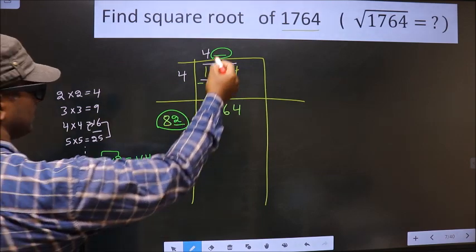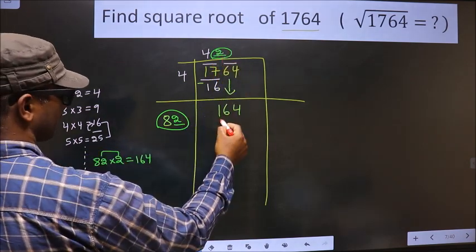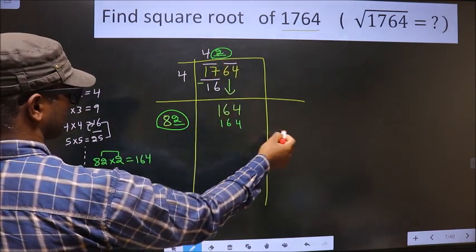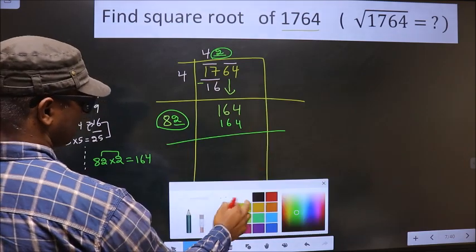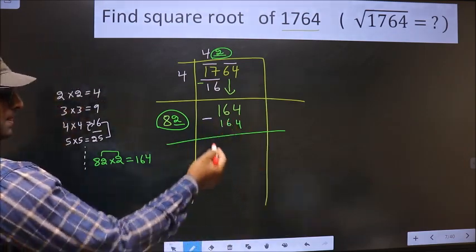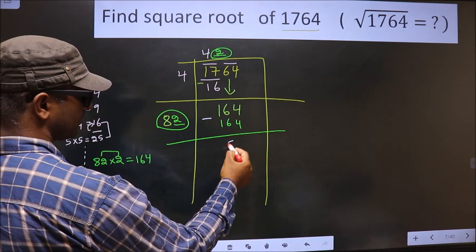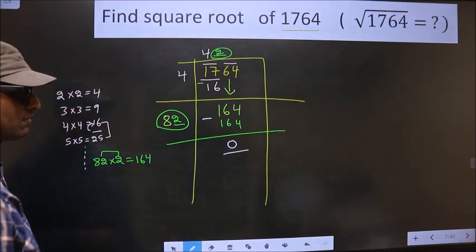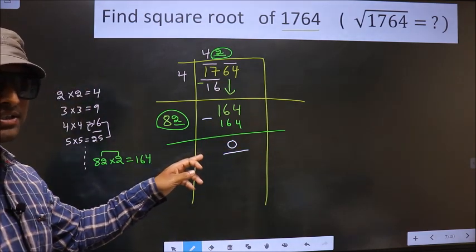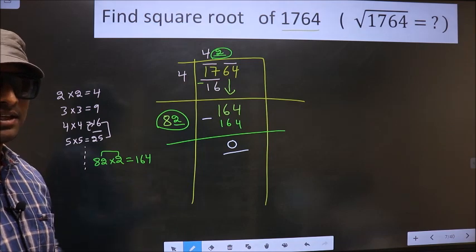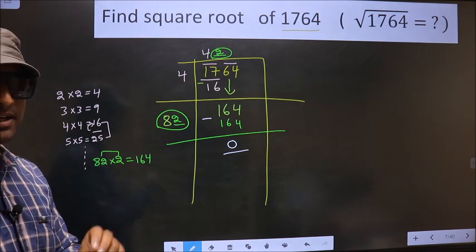So I will take 2 here, here also 2. And here 164. Now we subtract. 164 minus 164 is 0. So here we got 0. That means, given number is a perfect square.